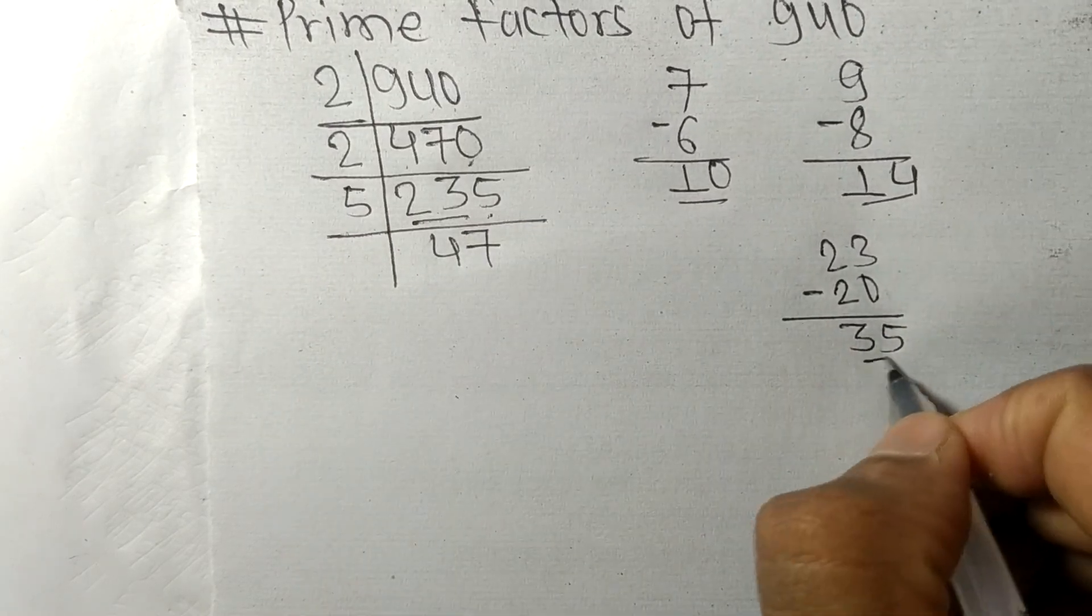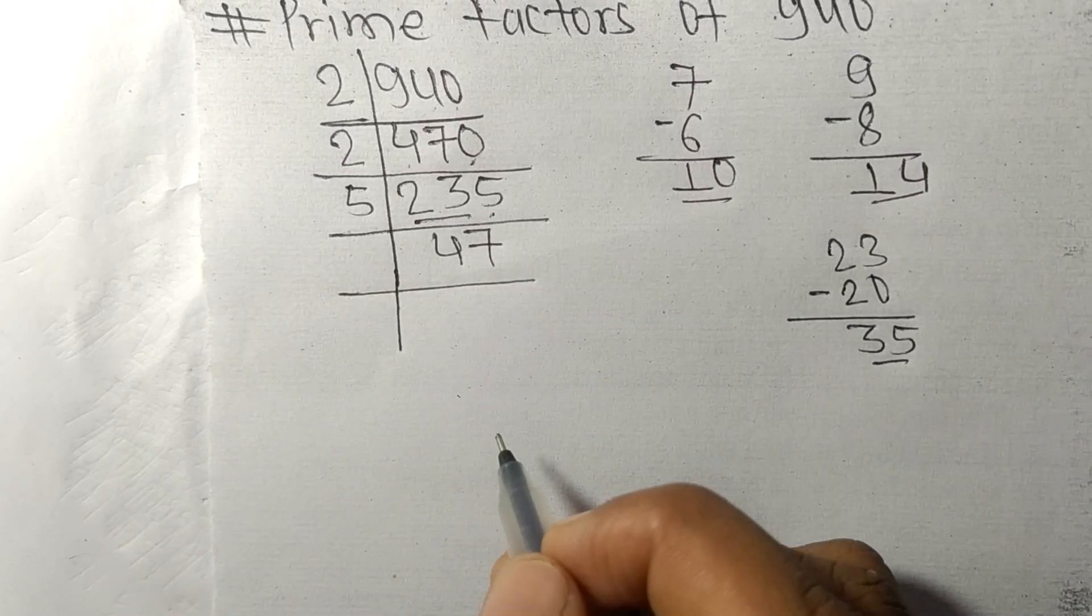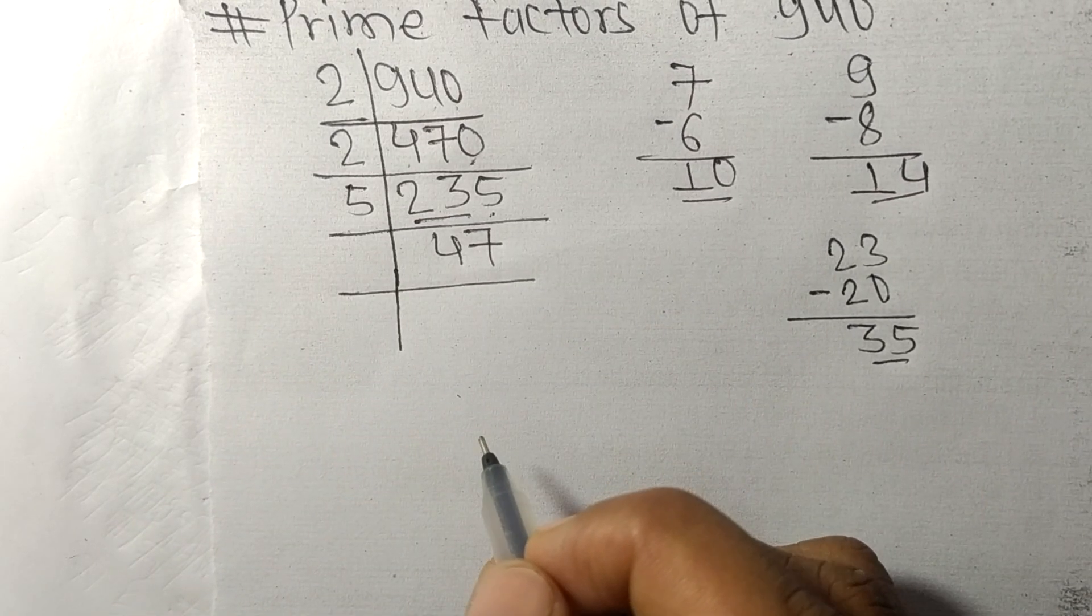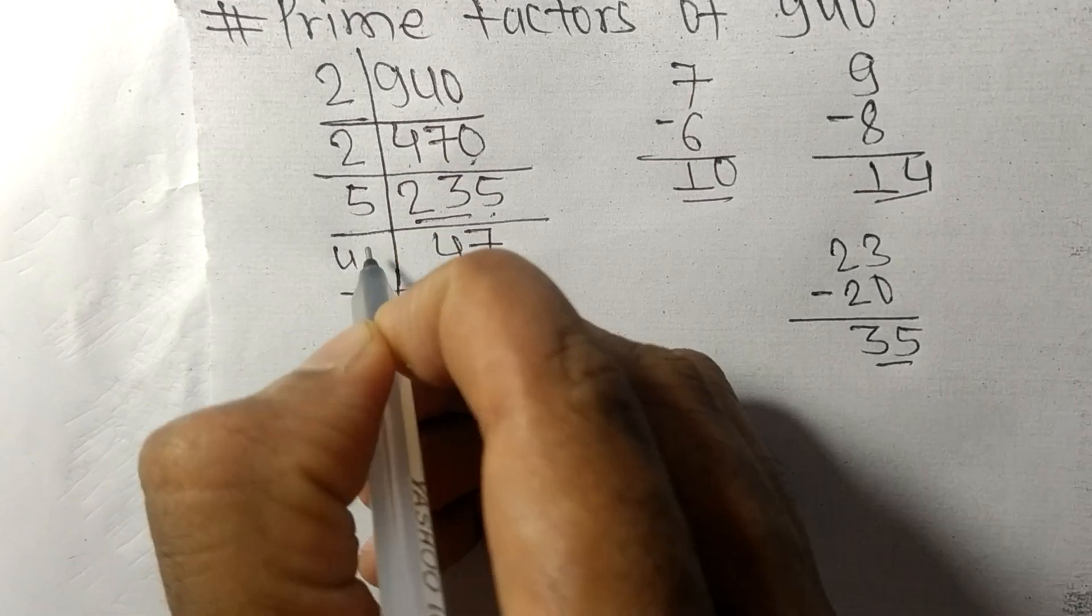5 times 7 means 35. So now we got 47 which is our prime number, so it is exactly divisible by 47 only.